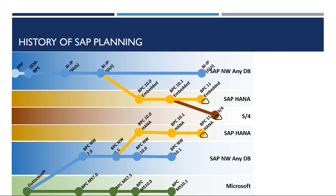The next iteration in planning was the release of BIIP in 2006. While at first glance BIIP and BPS appeared to differ significantly, the overall approach to planning remained the same. The terminology of the various configuration steps differed — for example, a planning area in BPS was termed aggregation level in BIIP. BIIP required the SAP portal to configure, which in my opinion was an unnecessary complication. The web front end was clunky at best and came with all the drawbacks of doing actual work in a web client.